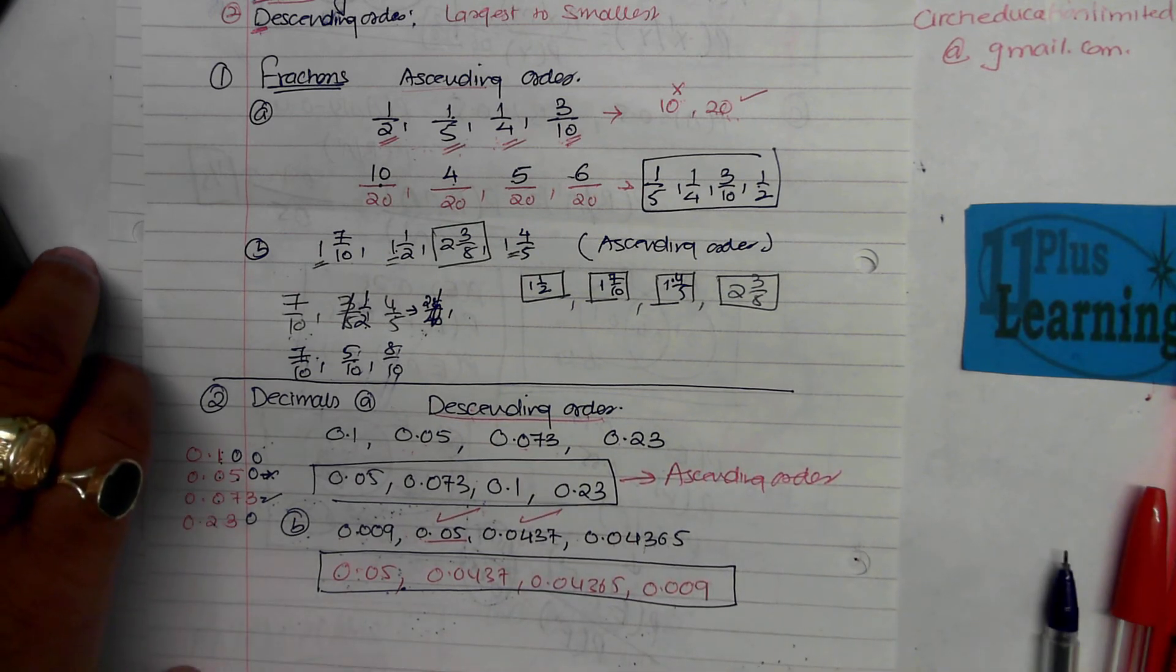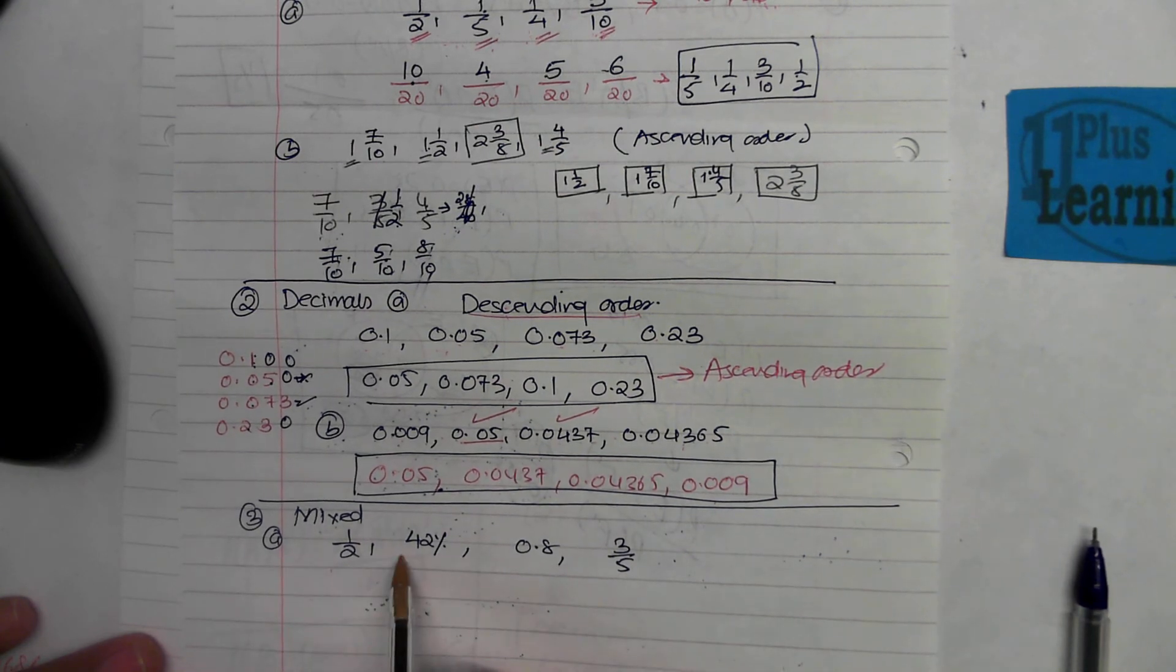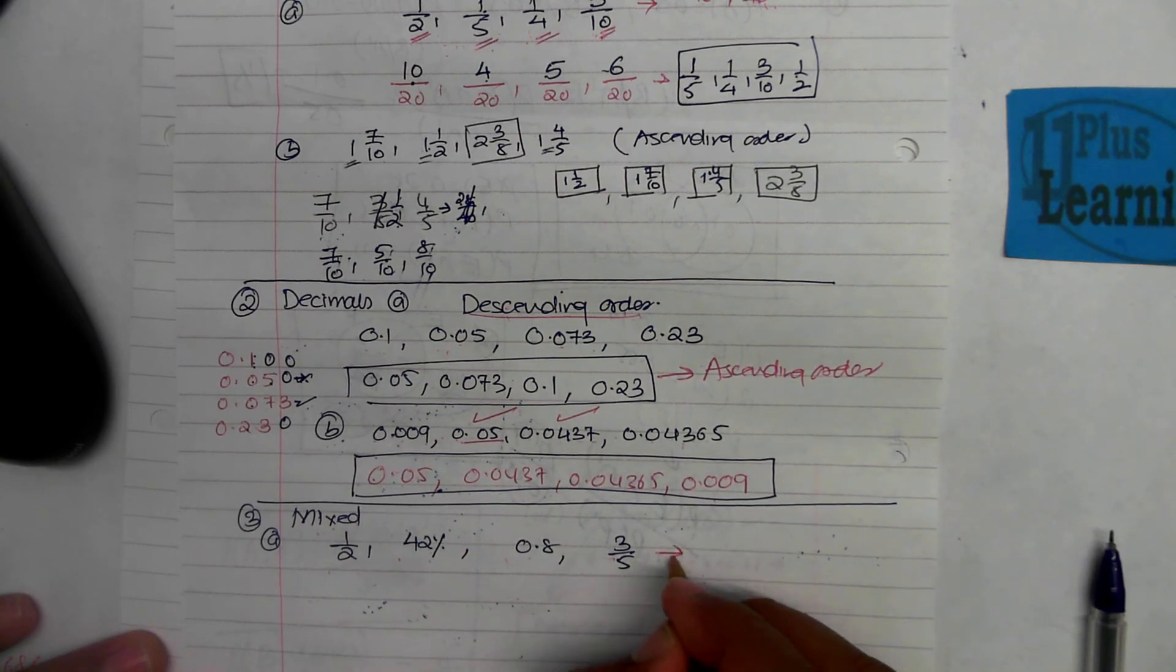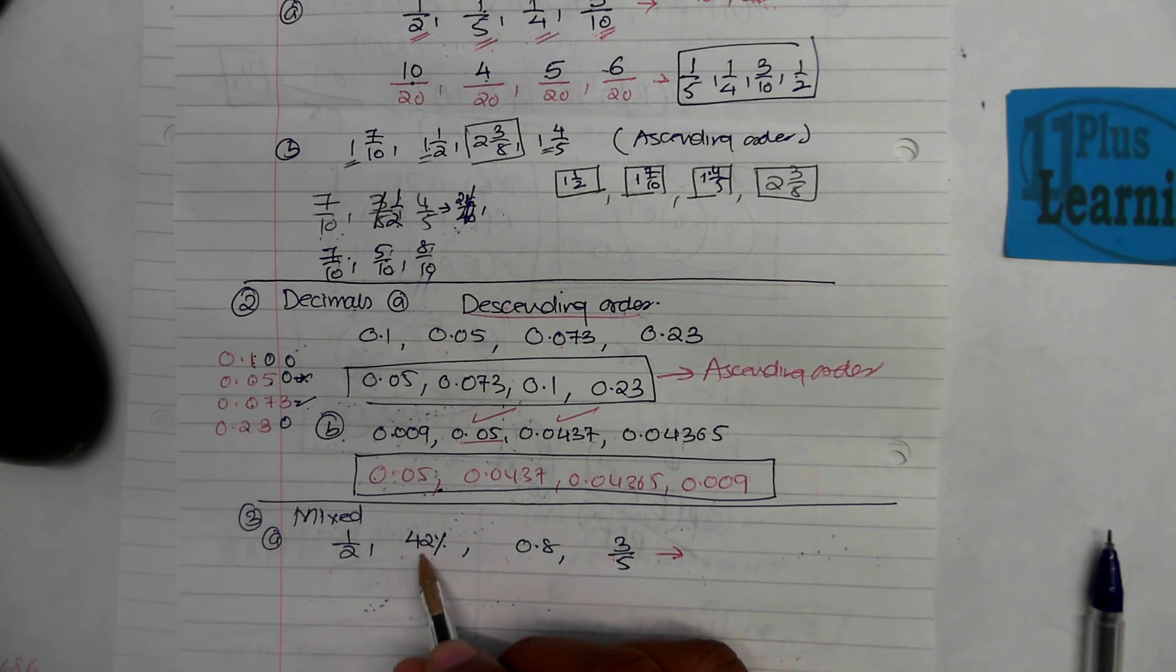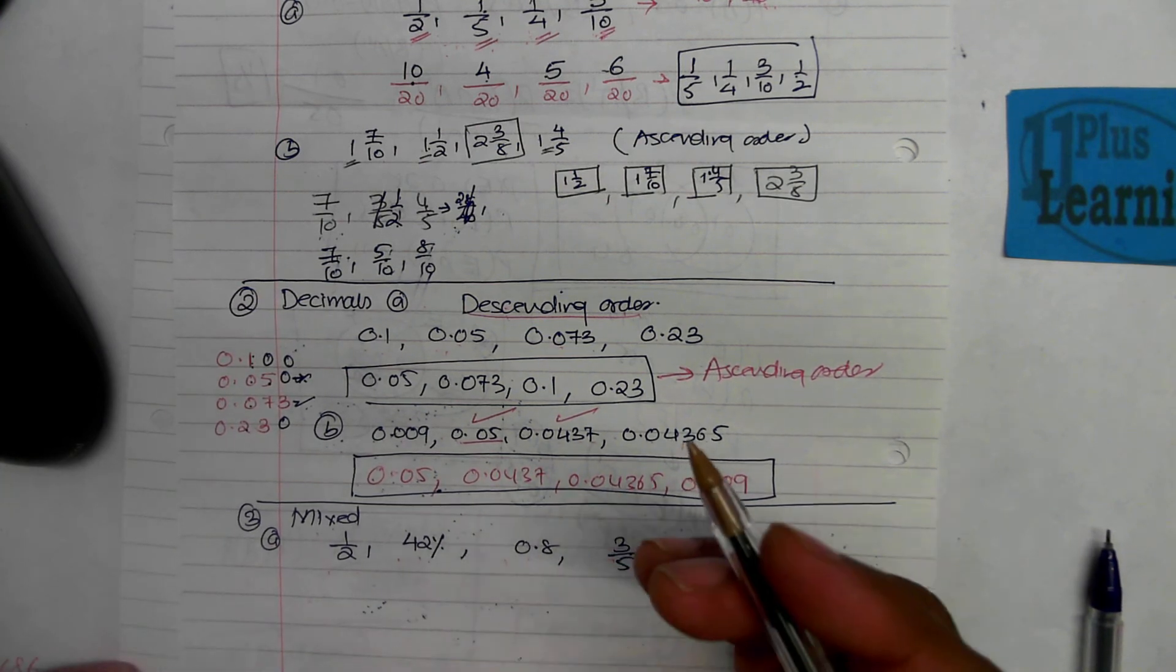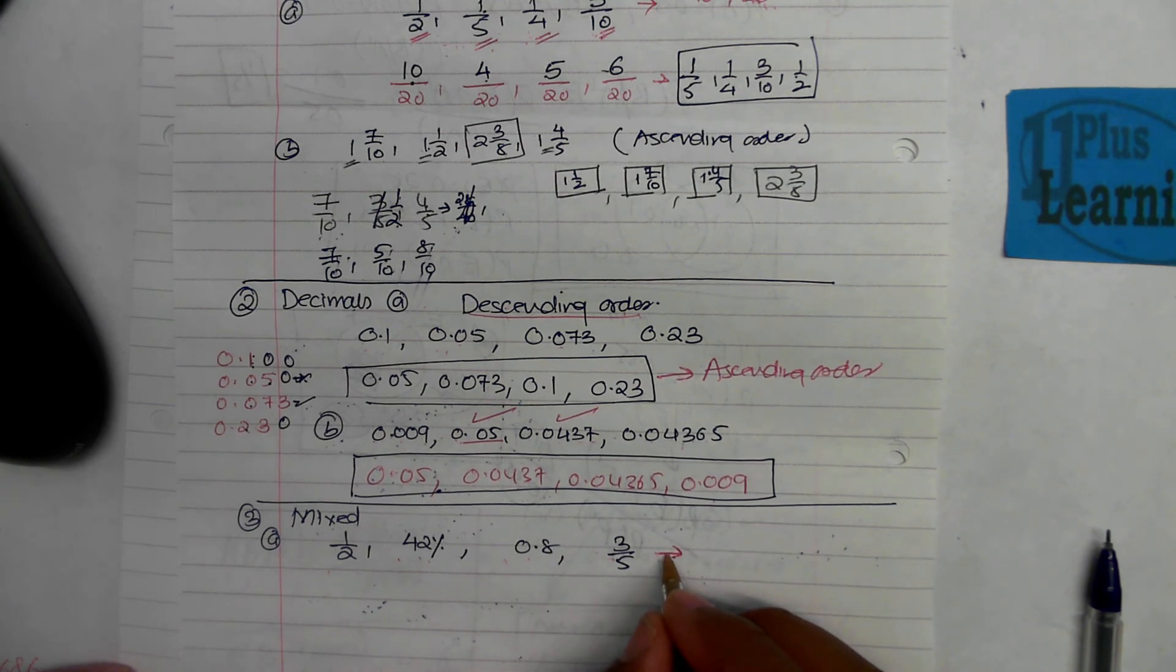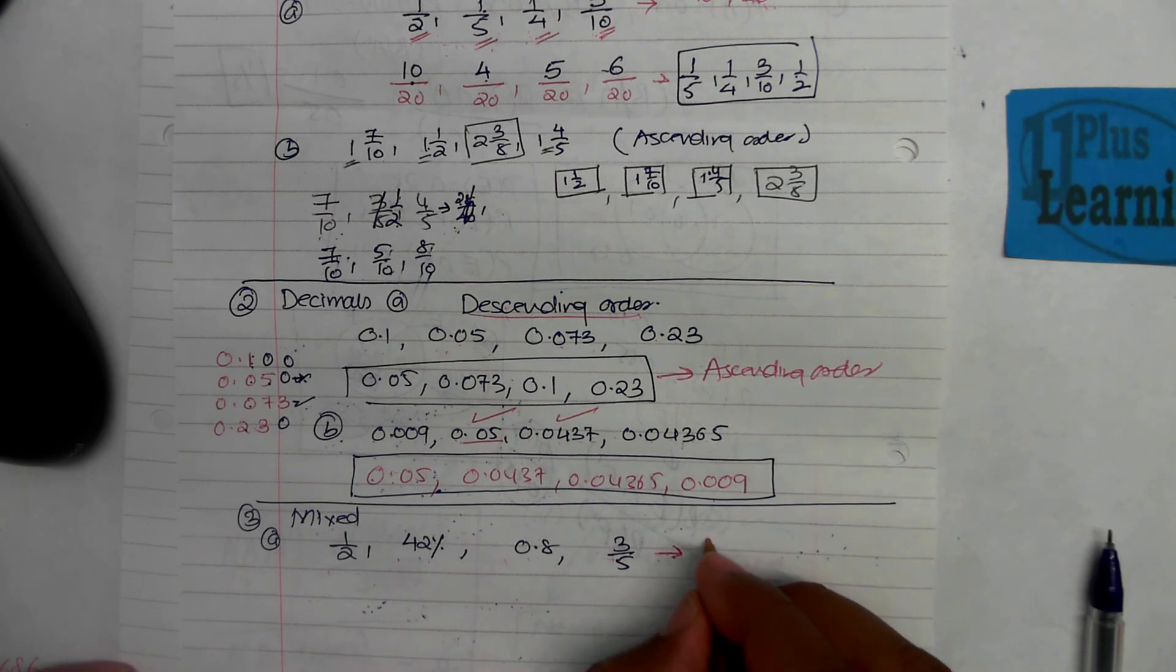We move on to the next set of questions now. The next set of questions are when you have numbers given in mixed form: some of them in percentage, fractions, and decimals. What you need to do is change all these into one form, either all in decimals or all in fractions. It's really a matter of preference, but I would advise if you can change them into decimals if possible.